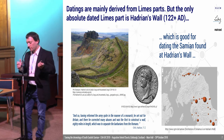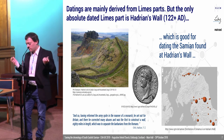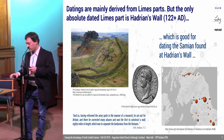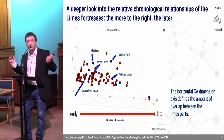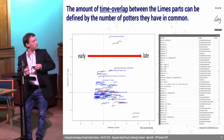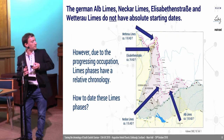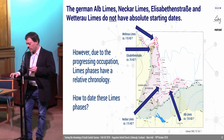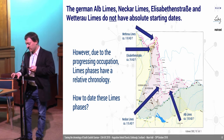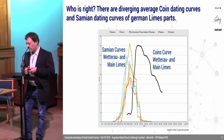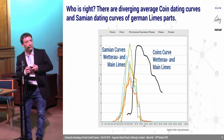Sometimes, or mainly, the datings are derived from limes parts. But there's only one absolute dated limes part — it's Hadrian's Wall — which is very good for Samian found at Hadrian's Wall. But if you look at the German limes parts, they have the problem that there are no absolute starting dates. So the question is how to date these limes phases. You can do that by looking at some Samian curves or coin curves, but in the end the question is: who's right? There are different solutions for dating.